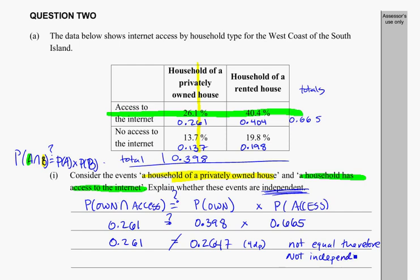Remember, the events are only independent if those two values work out to be exactly the same thing.